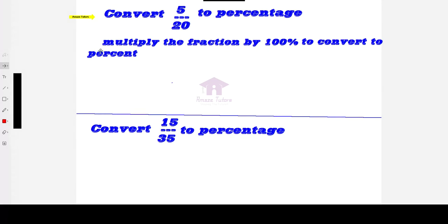As I have already mentioned, we need to multiply the fraction by 100%. Let me do that: 5 by 20 times 100. I need to include the percentage symbol because that is the form I'm converting to.